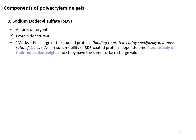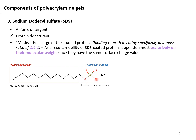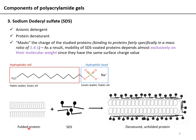SDS also acts to mask the charge of the studied proteins. It binds to protein at a specific ratio — typically 1.4 grams of SDS per 1 gram of protein. SDS has a hydrophilic head and a long hydrophobic tail; it coats the entire protein, unfolds it, and now the protein molecules separate simply on the basis of size. The effect of shape is negated because all proteins have been unfolded, and the effect of charge is also negated because SDS coats the protein giving it a uniform negative charge, so all proteins migrate towards the positively charged anode.